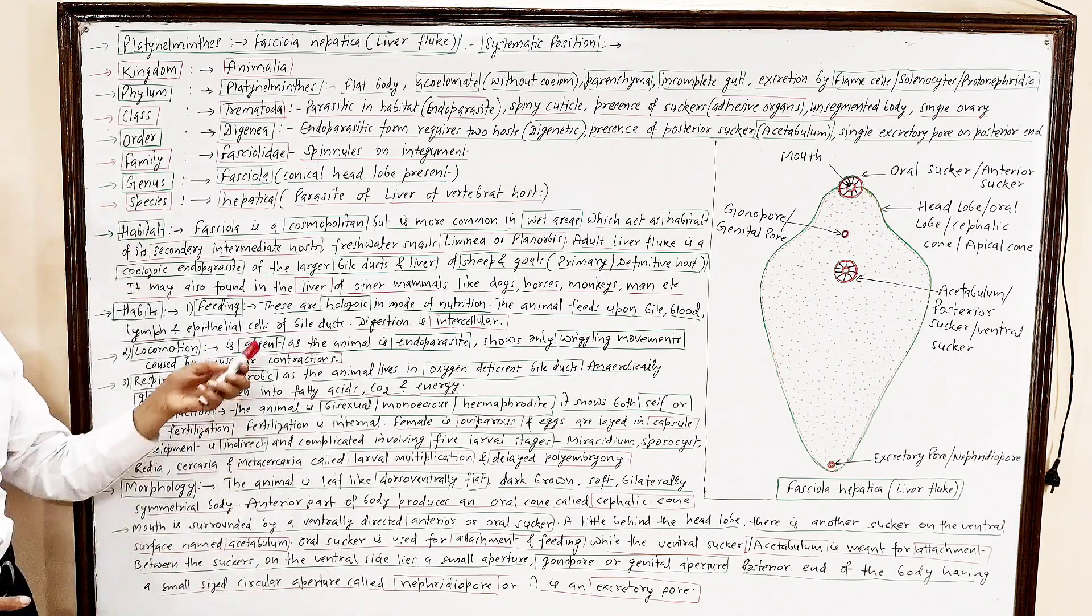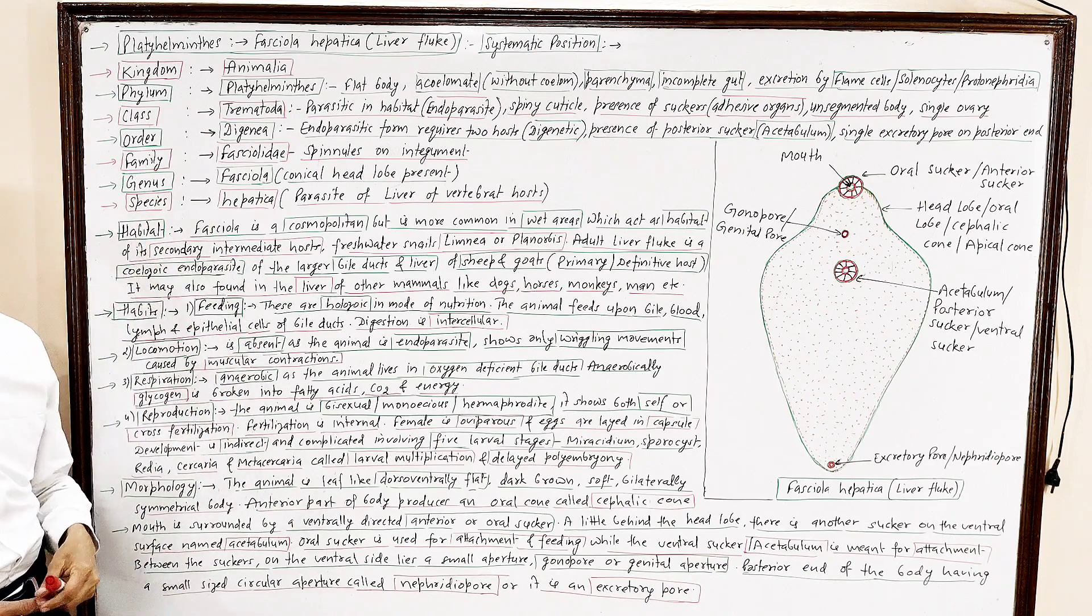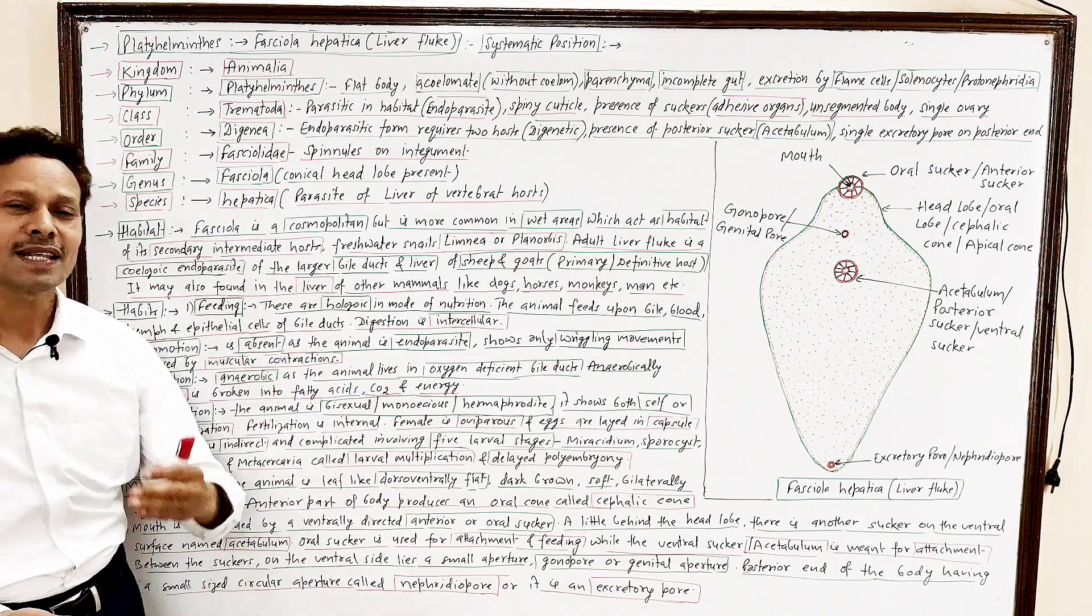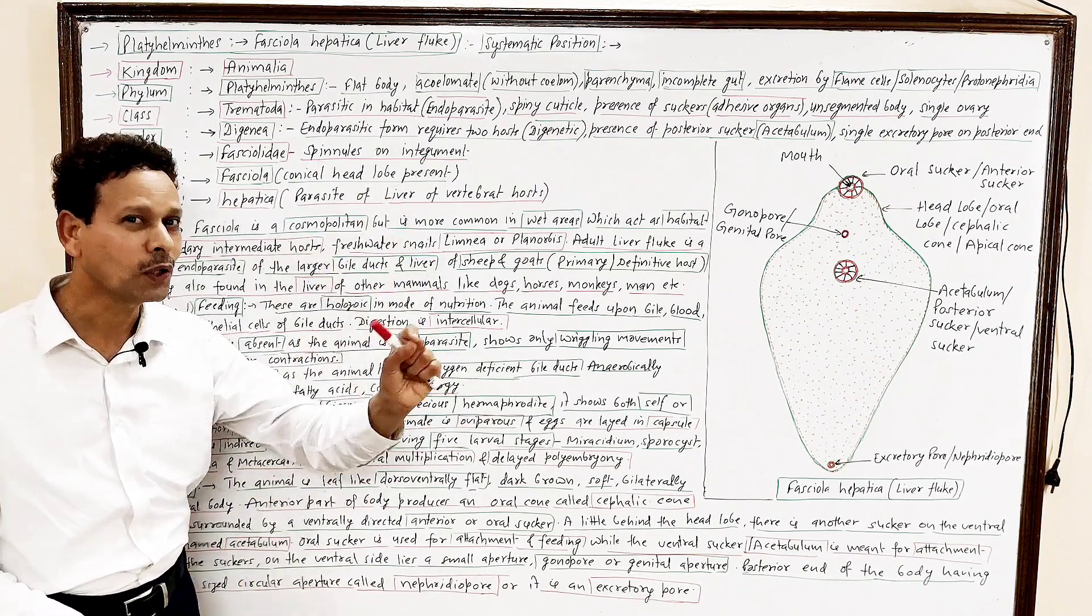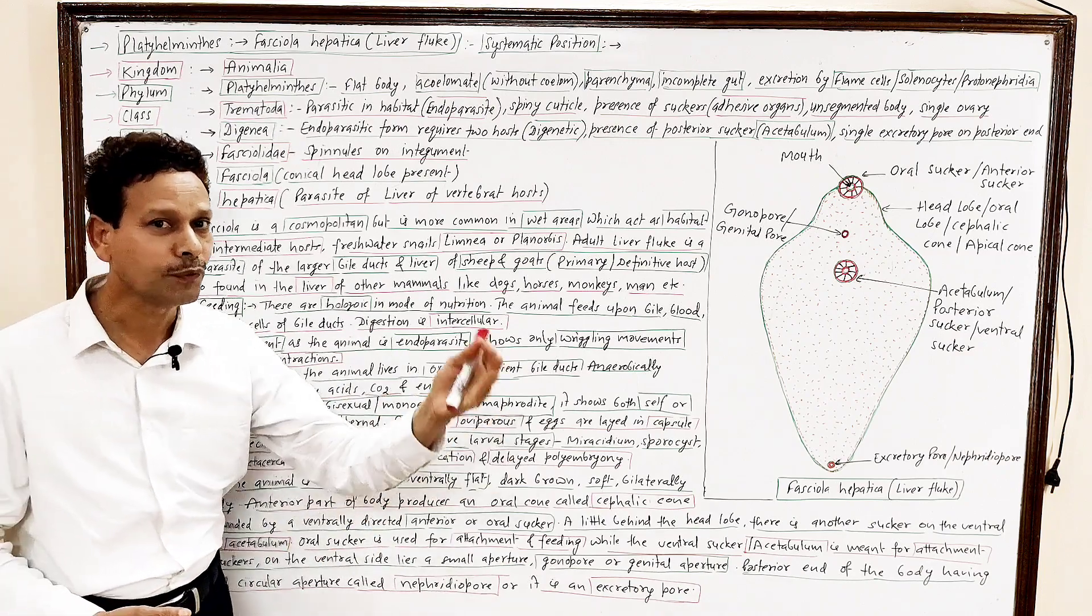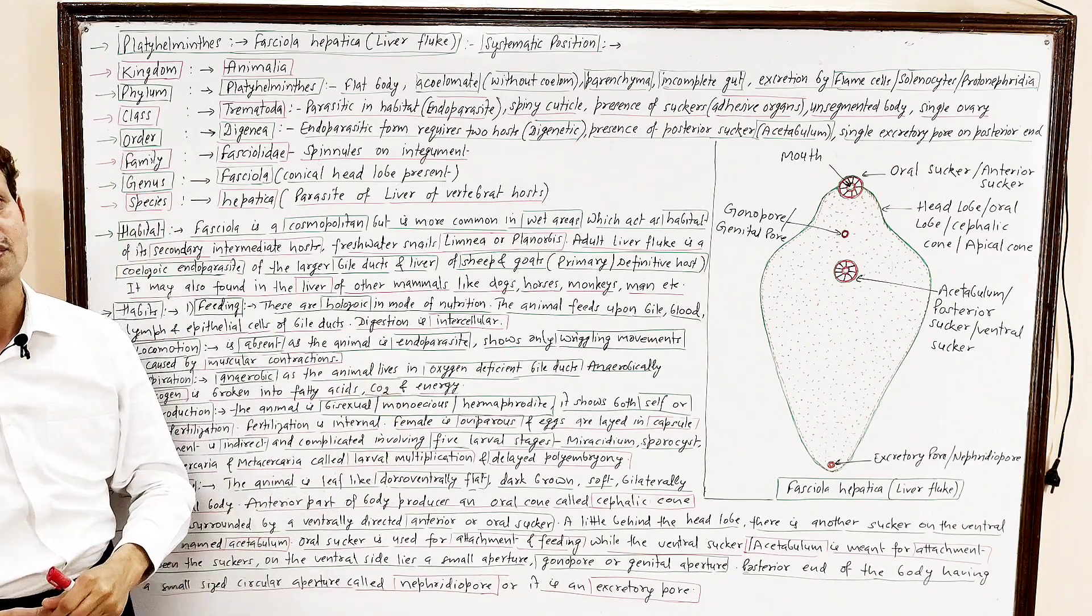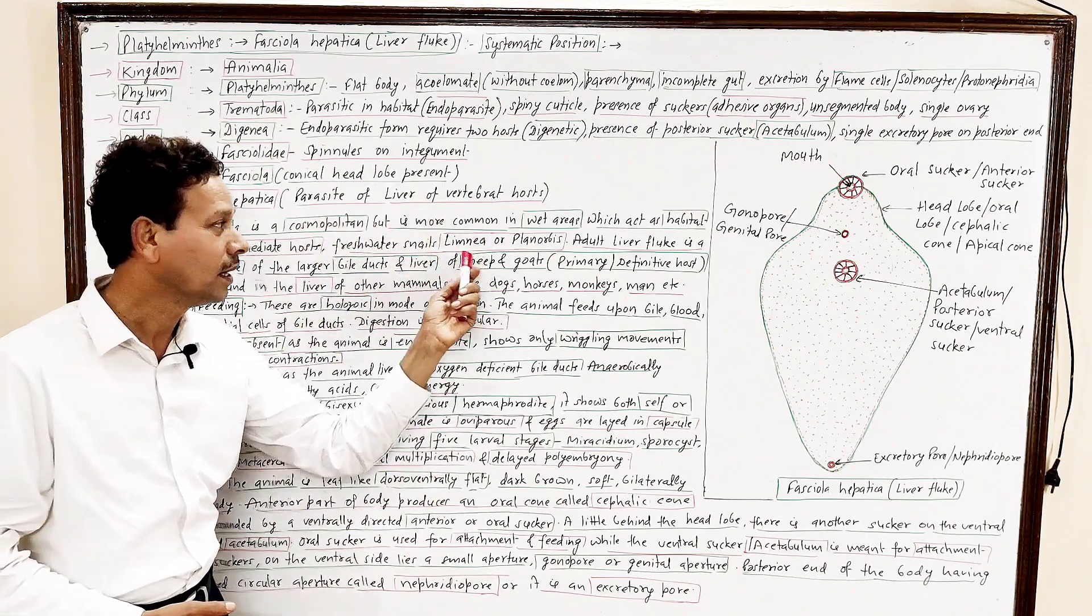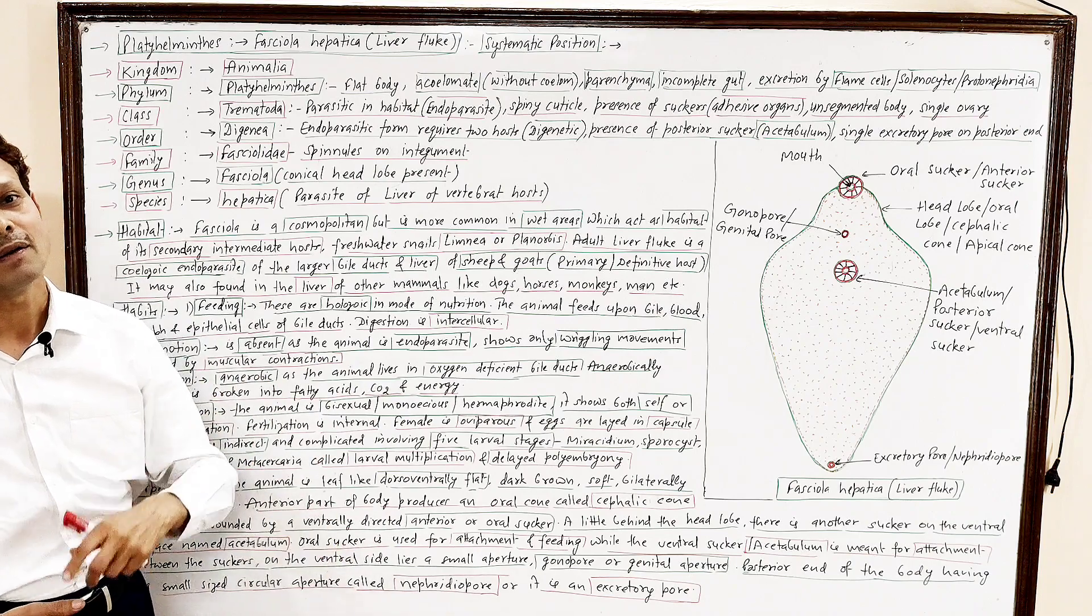Now we will discuss some important characteristic features. First of all, habitat. The animal is, the Fasciola hepatica is cosmopolitan. As the animal is found everywhere, but it is more common in wet areas. Because in these wet conditions, it is secondary, it is intermediate host, that is a mollusk, that is a snail, like Limnaea or Planorbis, which is commonly found in wet conditions.